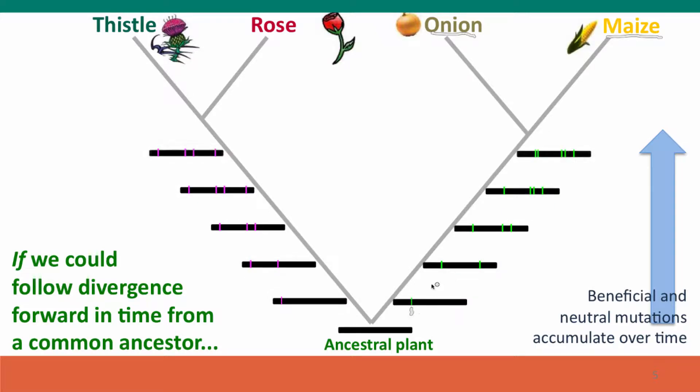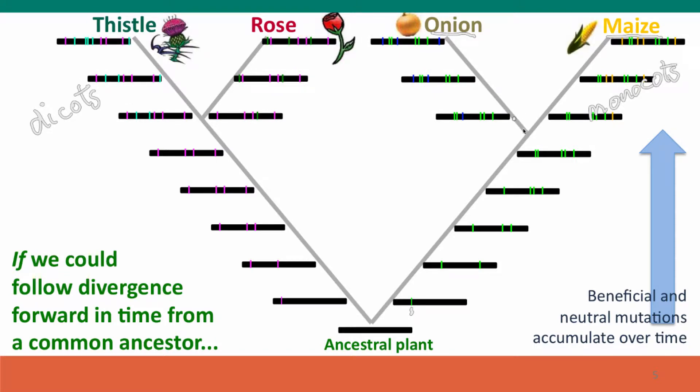So starting with this black sequence representing the sequence in the ancestor, I've drawn little vertical hatch marks to indicate mutations that have accumulated in the lineage that leads to maize and onions. If you're a botanist, you'll recognize that this is the big group that botanists call monocots, and that thistle and rose are members of the big group called dicots. The green lines mark mutations that accumulated in the lineage leading to the monocots. Because this lineage is evolving independently than the other, different mutations are going to arise just by chance and accumulate in the lineage leading to thistles and roses. We follow time further forward.